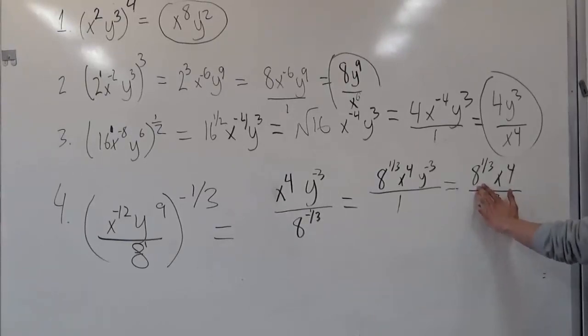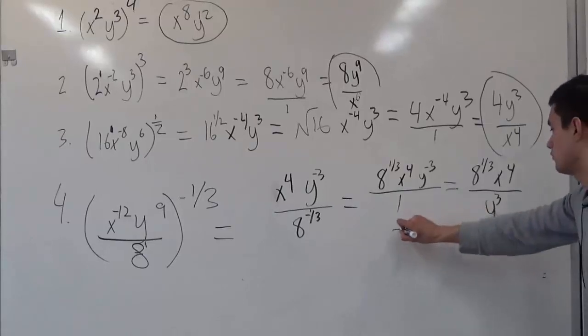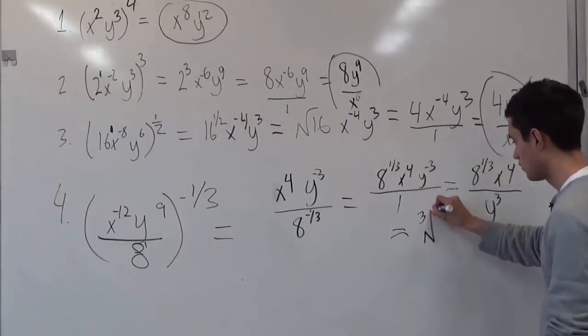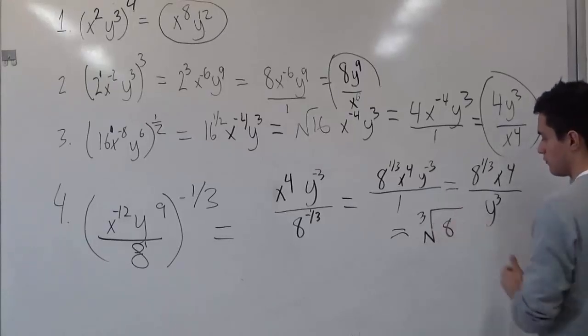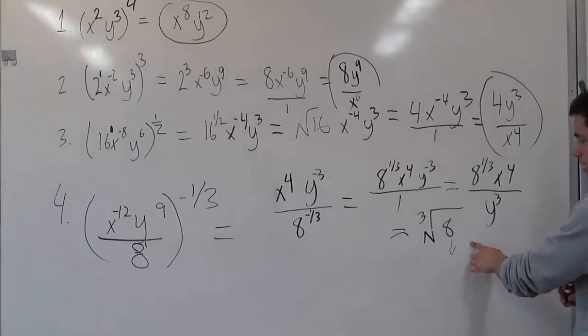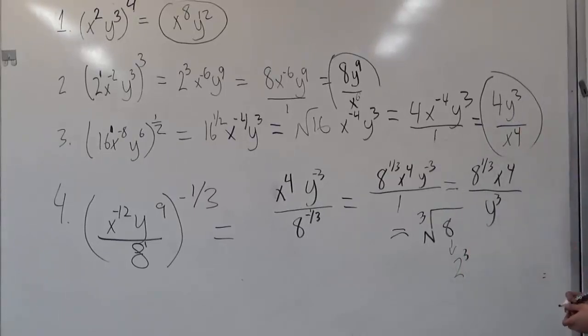So as you can see, we have 8 to the 1 third power. And what we already know is that this can be converted into a cube root. So this can just be the cube root of 8. So now, in order to cancel this out, we have to understand that something to the third power will give us 8. And that number would be 2, because 2 times 2 times 2 is 8.